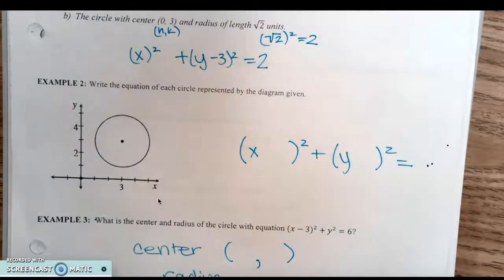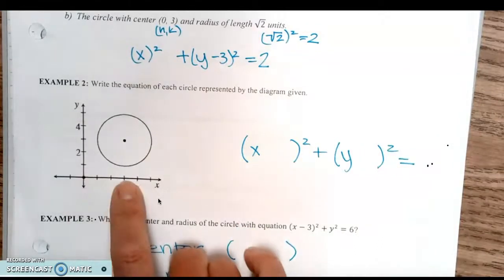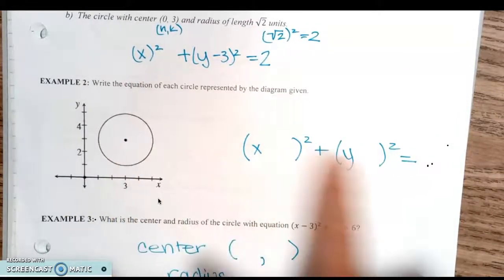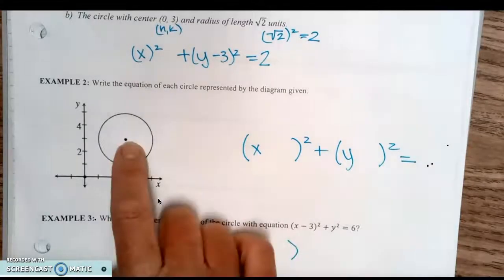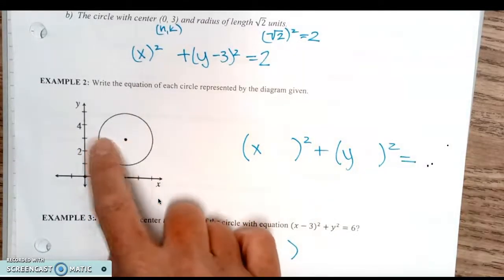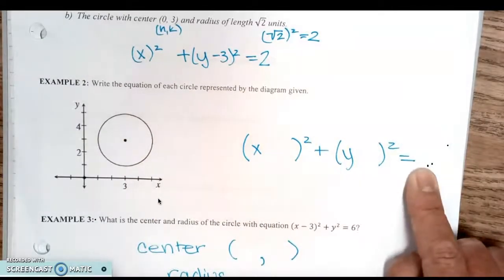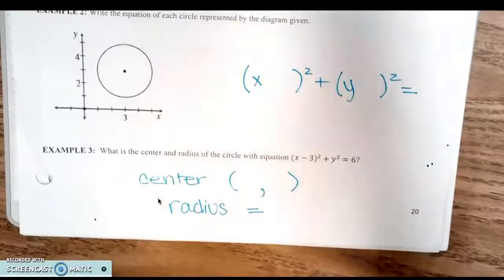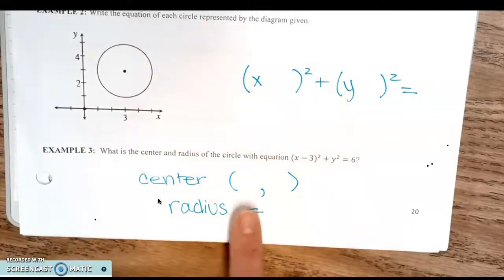Example 2: write the equation of each circle represented by the given diagram. First, locate the center — we went over three and up three, so x minus 3 and y minus 3 go in the parentheses. From the center to any of the outer points is 2 units, so the radius is 2, meaning 4 goes on the right side. The equation is (x - 3)² + (y - 3)² = 4.